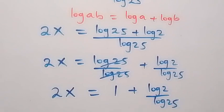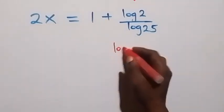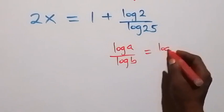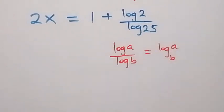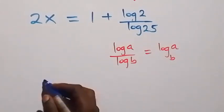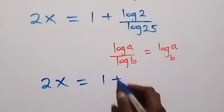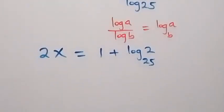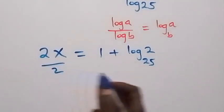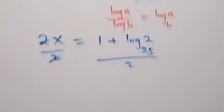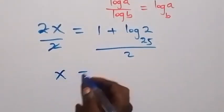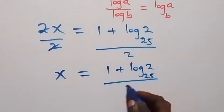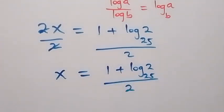Applying the change of base law — log a over log b can be written as log a to base b — we have 2x equals to 1 plus log 2 to base 25. Since we are finding x, we divide all sides by 2, so x equals to 1 plus log 2 base 25, all over 2. We have the solution to this given problem.